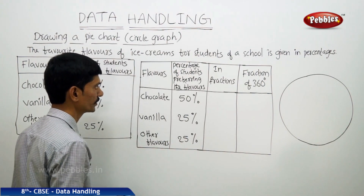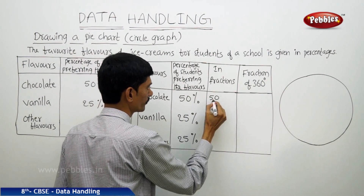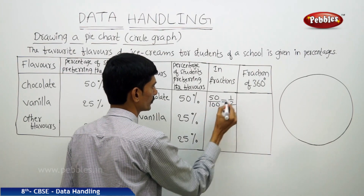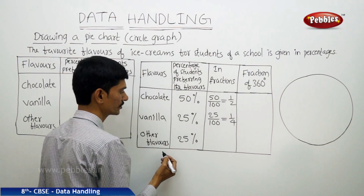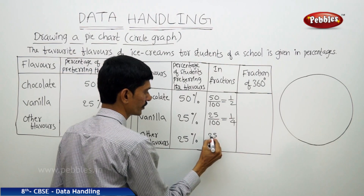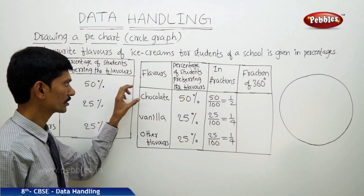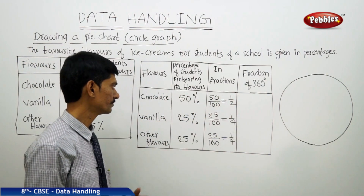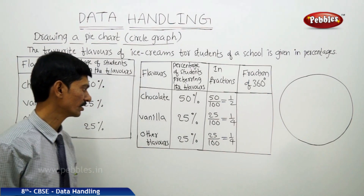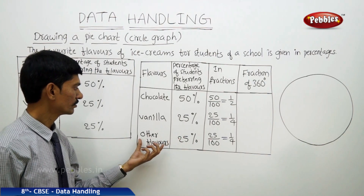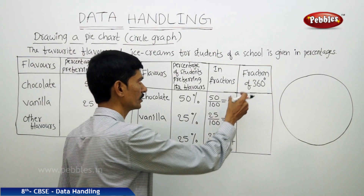We will find the fraction of each sector. 50% means 50 by 100, which equals 1 by 2. 25% means 25 by 100, which equals 1 by 4. The other flavours are also 25%, so 25 by 100 equals 1 by 4. So the proportion of the sector representing chocolate is one half, vanilla is one fourth, and other flavours is one fourth of the whole circle.